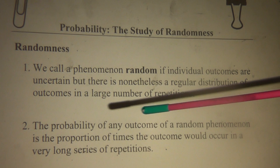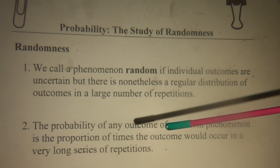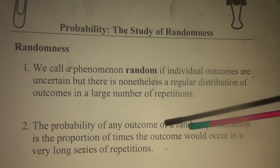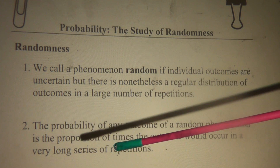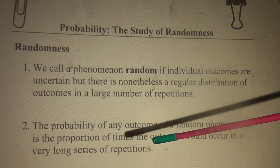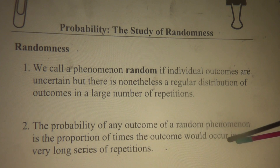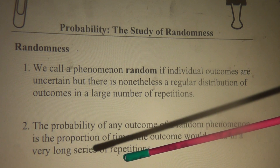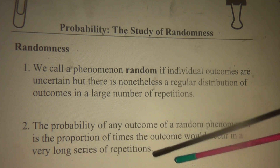Two: the probability of any outcome of a random phenomenon is the proportion of times the outcome will occur in a very long series of repetitions.